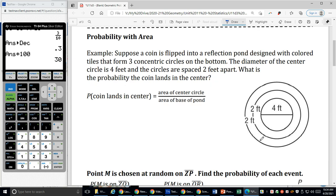Suppose a coin is flipped into a reflection pond designed with colored tiles that form three concentric circles. Concentric just means one inside the other. So notice my circles, one, two, three, they're inside each other. That's what we mean by concentric. The diameter of the center circle is four feet and the circles are spread two feet apart. What is the probability that the coin lands in the center?